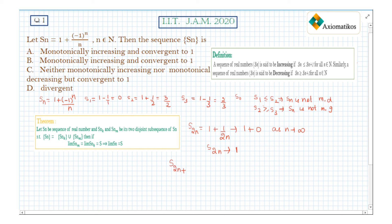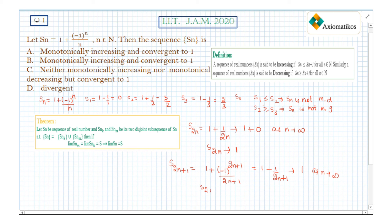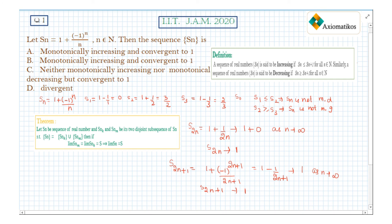Now let us find the subsequence of odd numbers. S2n+1 is 1 plus (-1)^(2n+1) upon (2n+1), which equals 1 minus 1/(2n+1), and this converges to 1 as n goes to infinity. So S2n+1 converges to 1. We now have that both the even and odd subsequences converge to the same number 1. So by this theorem, the sequence Sn converges to 1.